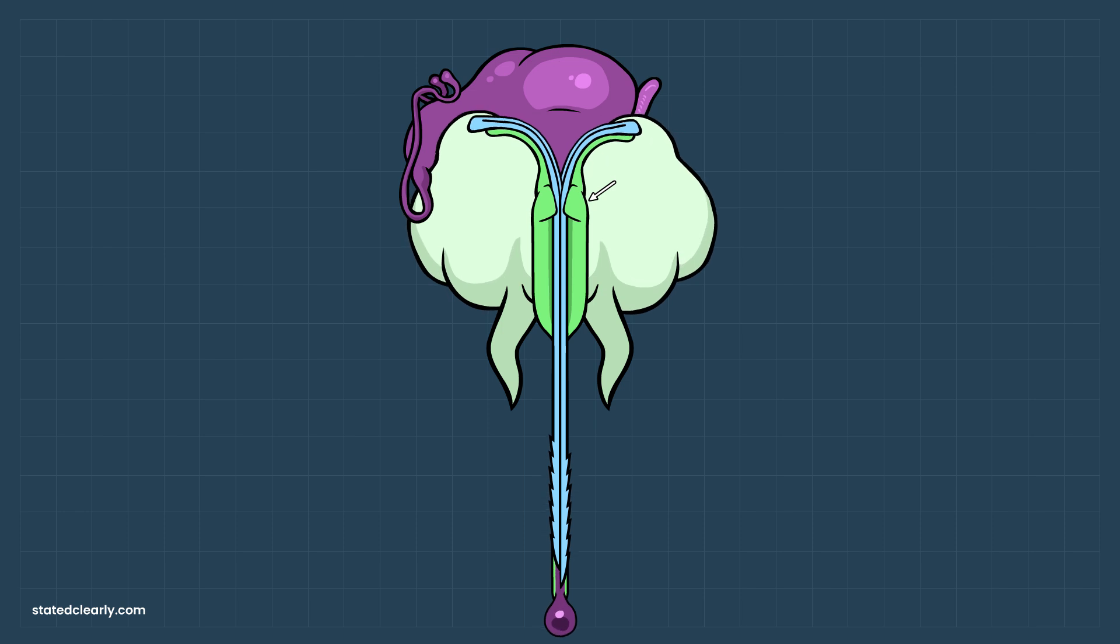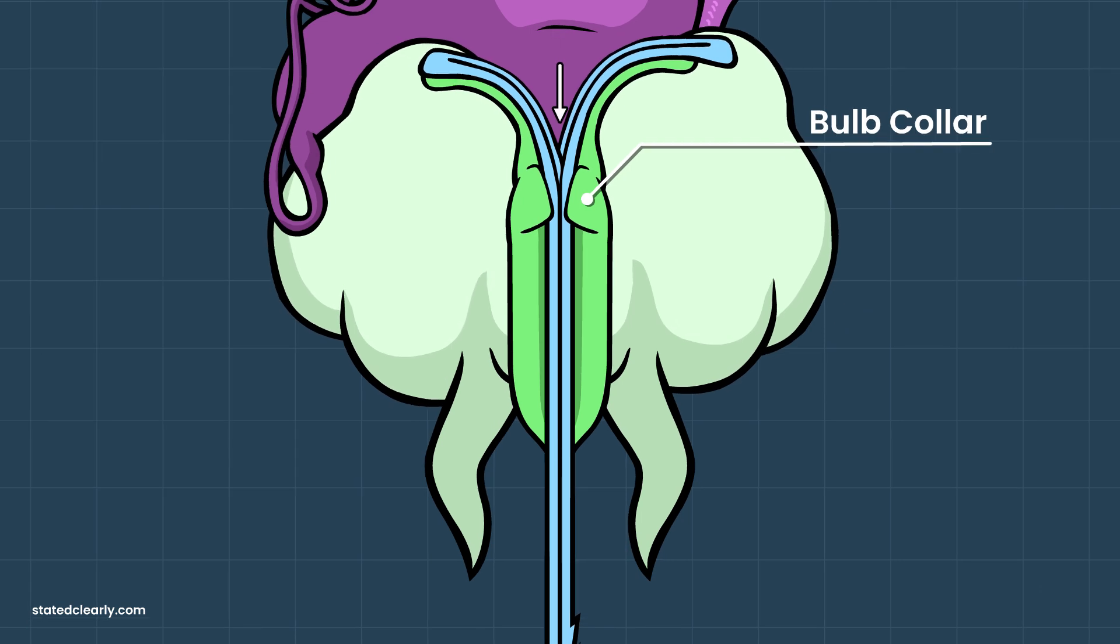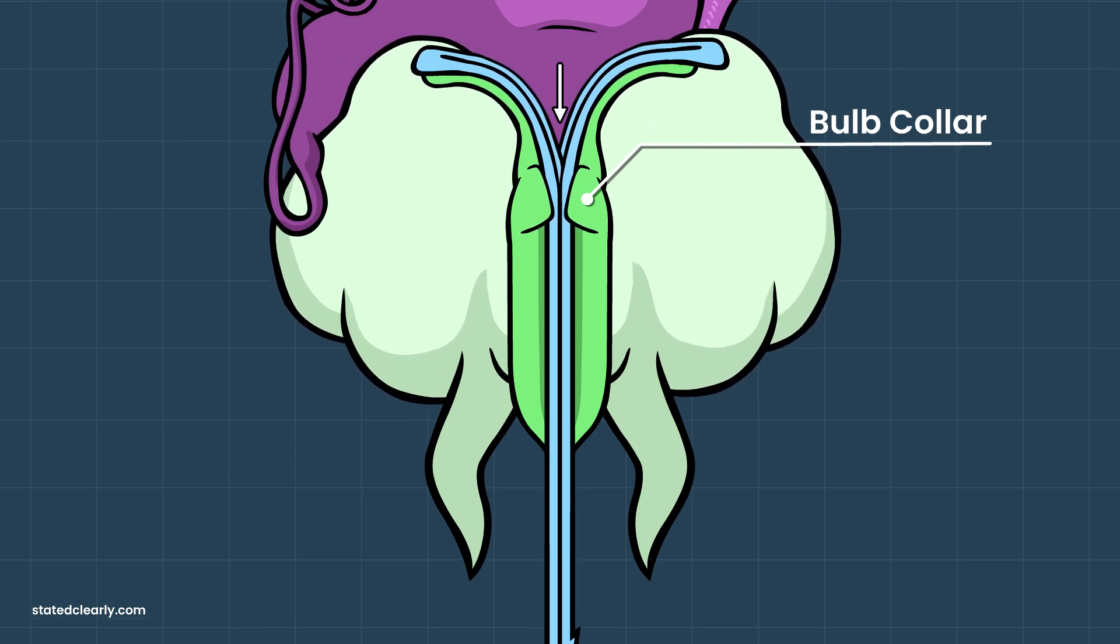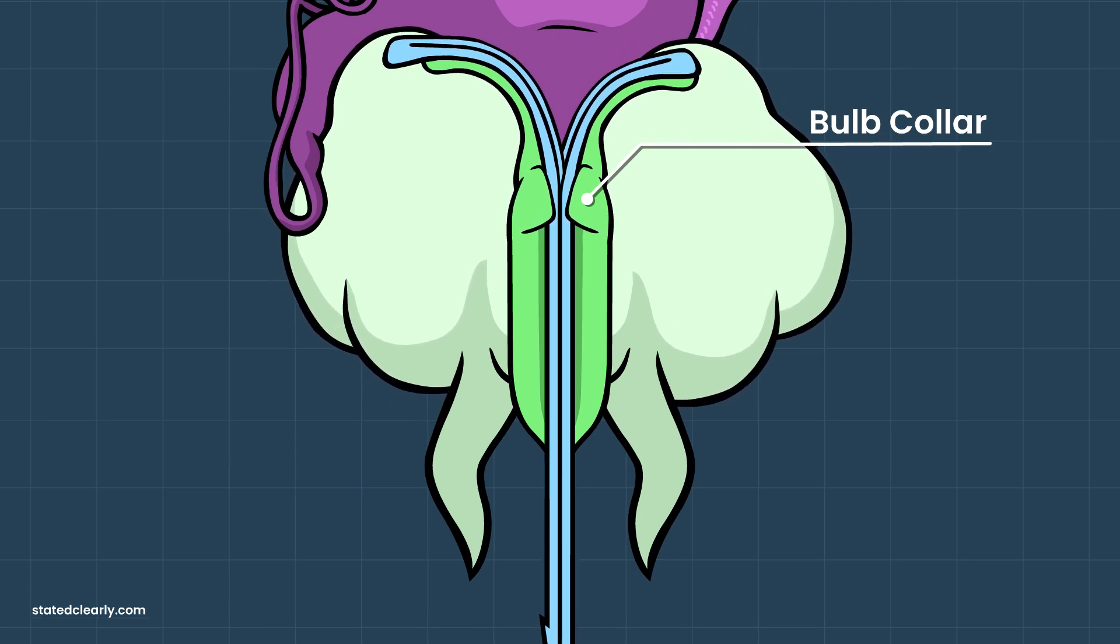Above the bulb, where the venom sac comes in, there are two swellings that function like zipper guides. These make up the venom bulb collar. This collar forces the two lancet shafts together as they move, sealing them shut down the midline.